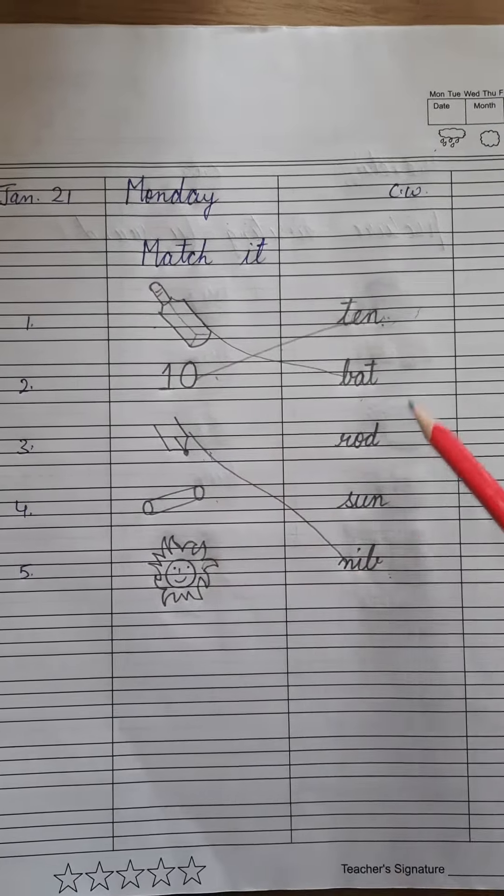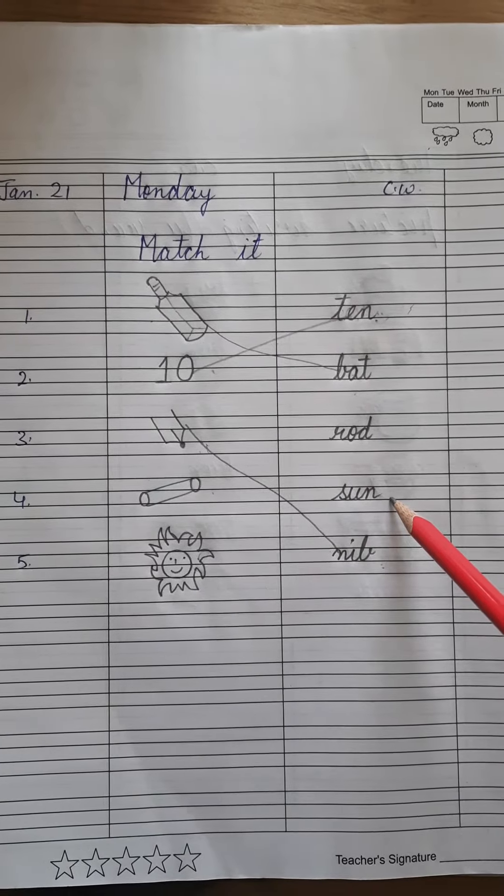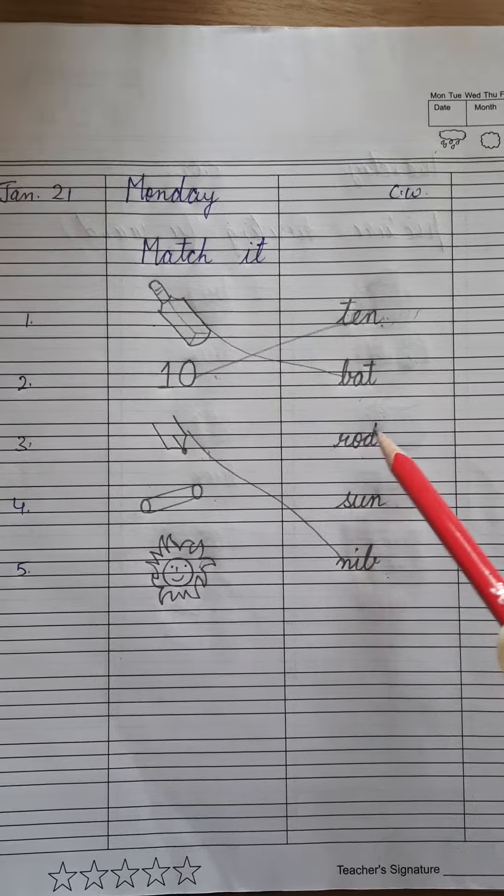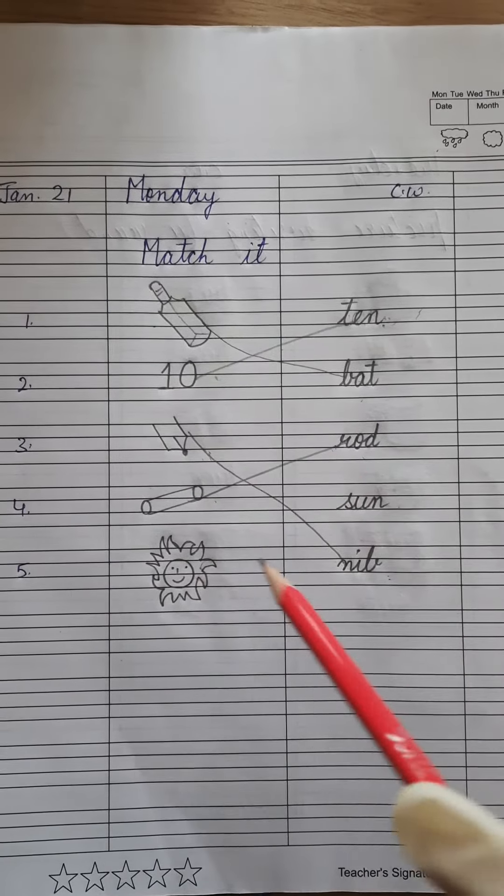Rod. Where is the word rod? This one? No. This one? Yes. R-O-D, rod. Match it like this.